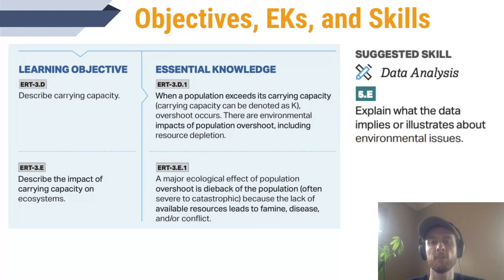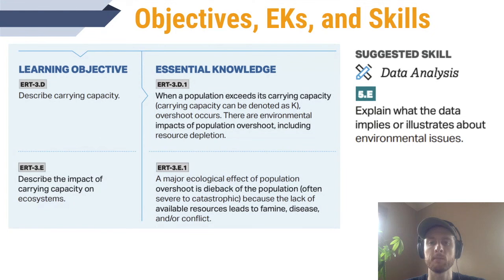Let's take a look at our objectives for the day. We need to be able to describe what carrying capacity is and describe the impact it has on ecosystems. In order to do that, we need to know that when populations go over their carrying capacity — which is called overshoot — there's a die-off that follows, usually because they've depleted a resource such as food.